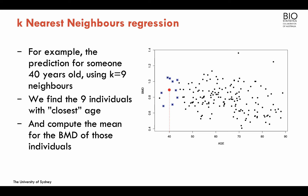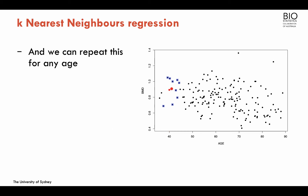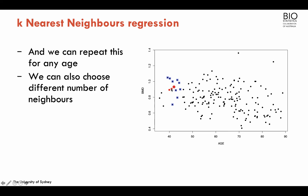Then I average the BMD of these nine individuals, and that's my prediction for age 40. We could go on: for age 41, I get the nine closest values to age 41, compute the average BMD, and that's the prediction. We can make predictions over the entire range of the interval.